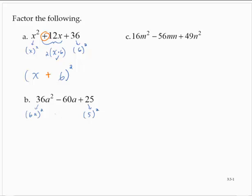So I check the middle term. Is it 2 times the product of 6a and 5? 6a times 5 is 30a. 30a times 2 is 60a. It fits the pattern.